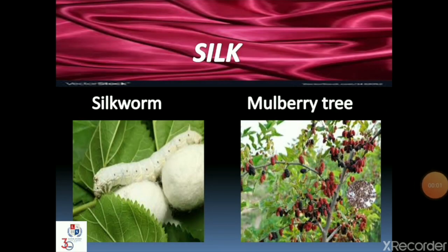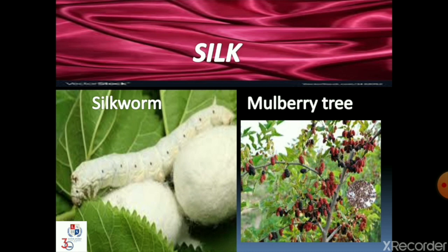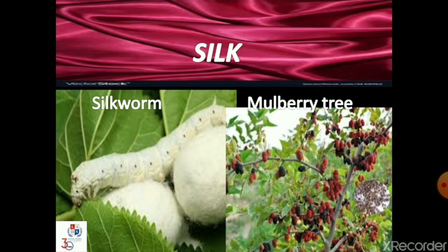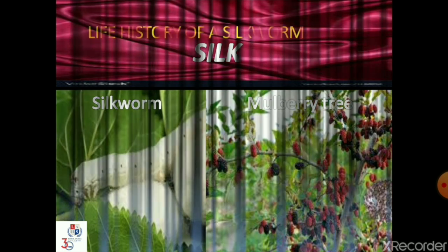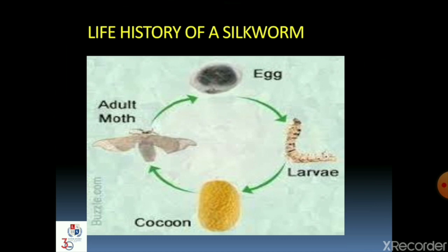Up next is silk. Silk is a natural fiber which is obtained from silkworm. It is the strongest natural fiber. Silkworm feeds on the leaves of the mulberry tree. Now let's know about the life history of a silkworm. The female silk moth lays eggs on mulberry leaves. The eggs are hatched into larvae called caterpillar or silkworm. The silkworm feeds on mulberry leaves, changes into pupa, and spins a cocoon around itself. The pupa then comes out of the cocoon as a silk moth, and in this way the cycle goes on.